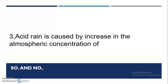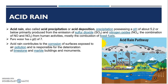Third question: acid rain is caused by an increase in the atmospheric concentration of sulfur trioxide and oxides of nitrogen. Acid rain has a pH value of 5.2 or below — below 7 is acidic, above 7 is basic. It is produced by the emission of sulfur dioxide and nitrogen oxides from human activities, mostly from the combustion of fossil fuels. It is a disaster for buildings and monuments, especially limestone and marble ones. The Taj Mahal is a prime example of acid rain corrosion.